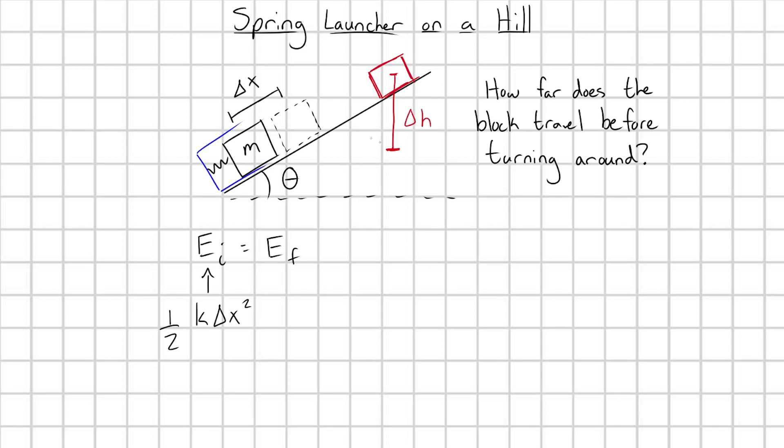And so at this peak height here, is the block going to have any kinetic energy? No, of course not. This is the turnaround point for the block. It's just about to turn around and start sliding back down the hill, which means it's instantaneously stationary. So all of the energy in that moment is stored in the potential energy, mg delta h. And these guys are equal to each other.